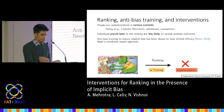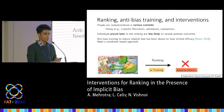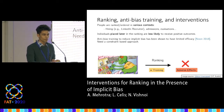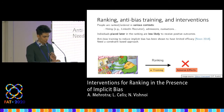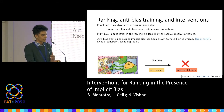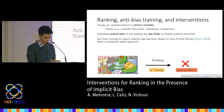One direction to mitigate such adverse effects could be to educate people generating these rankings about their implicit biases. However, such programs have been shown to have limited efficacy in practice, and this really calls for an intervention-based approach where we can have stronger guarantees on the kinds of outputs we get.